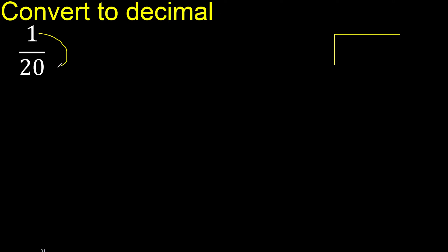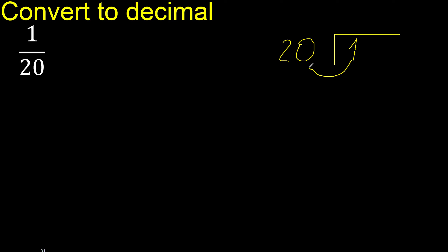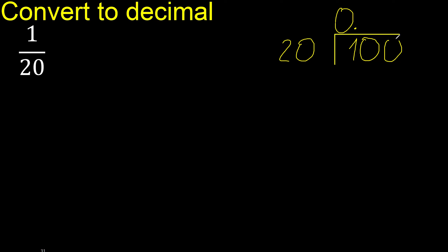1 divided by 20. 1 is less than 20, therefore complete with 0. Always complete with 0, and here: 0 point. The decimal point goes only once. 10 is less than 20, therefore complete with 0.